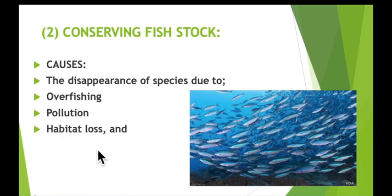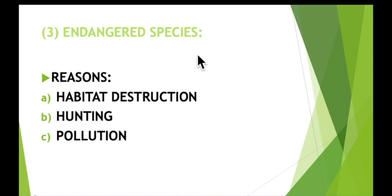Next is habitat loss and endangered species. An endangered species is one whose numbers have fallen so low that it is at risk of becoming extinct, or wiped out. Once a species has become extinct, it is gone forever. The reasons for species becoming endangered include habitat destruction, hunting, and pollution.